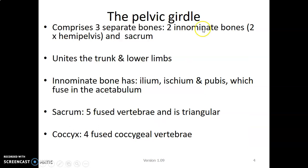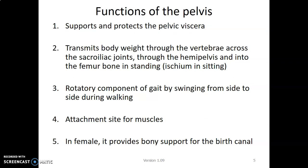The pelvic girdle has three bones: two innominate bones and the sacrum. The girdle unites the trunk and the lower limb. The innominate bone has an ilium, ischium, and pubis that fuse together at the acetabulum. The sacrum has five fused vertebrae and is triangular, while the coccyx has four fused vertebrae. The pelvis supports and protects pelvic viscera and transmits body weight from the vertebrae to the sacroiliac joints through the hemipelvis.